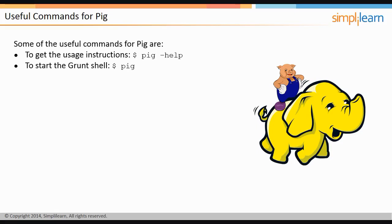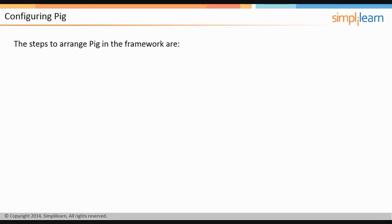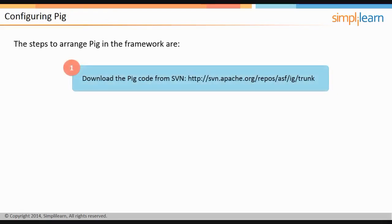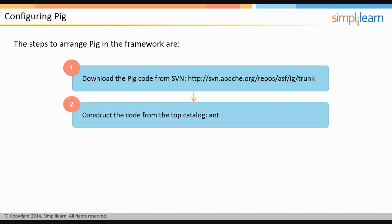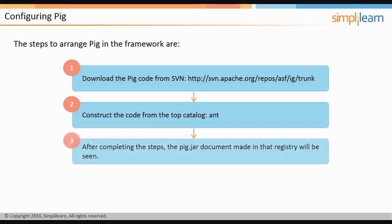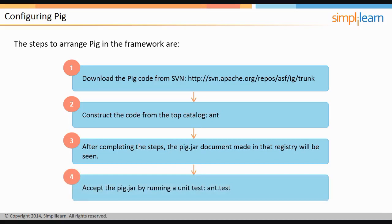The steps to configure Pig in your system are: check out the Pig code from Apache Subversion at svn:http://svn.apache.org/repos/asf/trunk, then build the code from the top directory using the ant command. On successfully completing these steps, you will notice the pig.jar file created in that directory. Validate the pig.jar file by running a unit test using ant test.